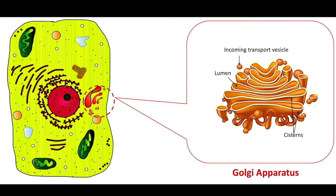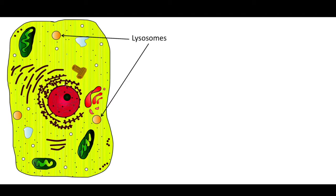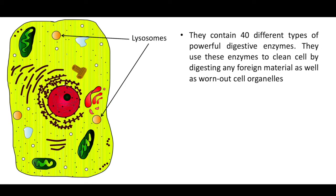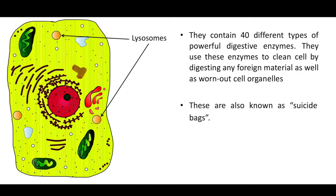These tiny vesicles of different shapes arranged in parallel stacks located near the nucleus are called the Golgi apparatus; they act as the delivery system of the cell. Lysosomes are small vesicles of different shapes that bud off from Golgi bodies. They contain 40 different types of powerful digestive enzymes, which they use to clean the cell by digesting foreign material as well as worn-out organelles. When the cell gets old or damaged, lysosomes may burst and the released enzymes digest the cell — hence they are called suicide bags.